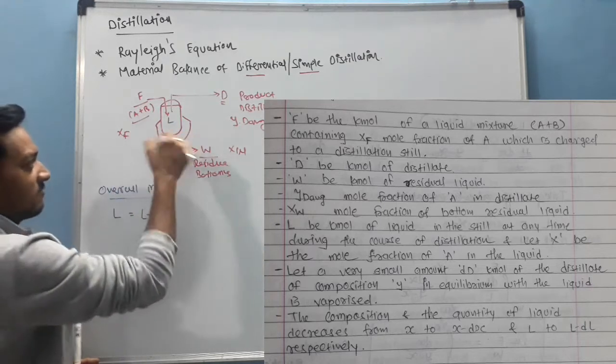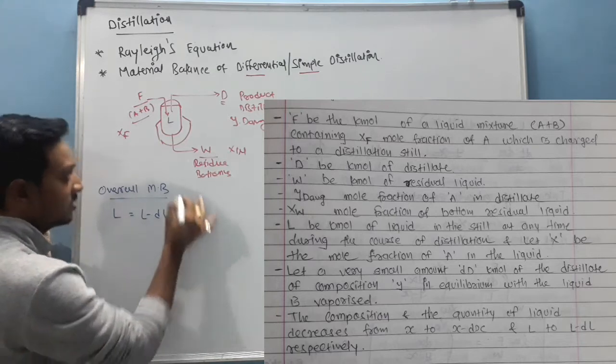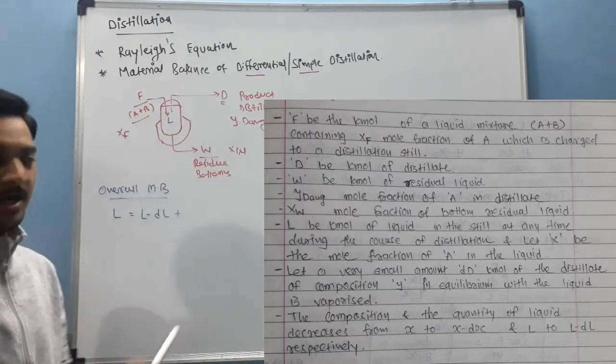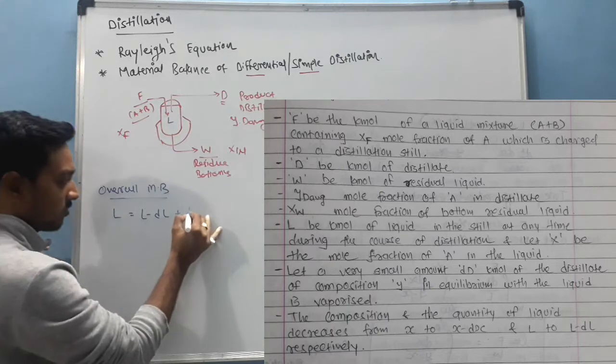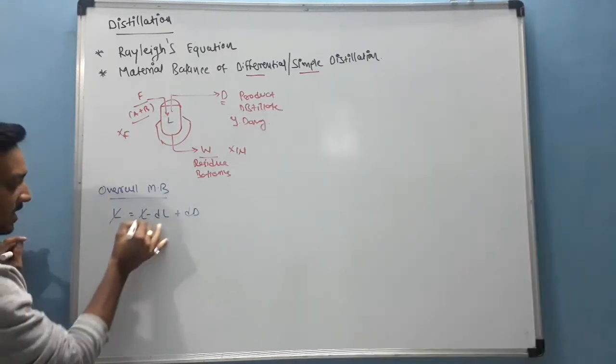All the liquid after some time will be vaporized. So the last limit of liquid is L to DL plus some amount of vapor in the still, called DD, composition Y. So L will cancel, DL is equal to DD.